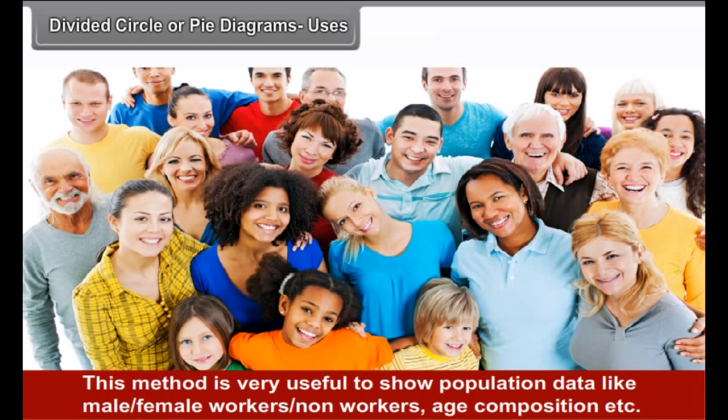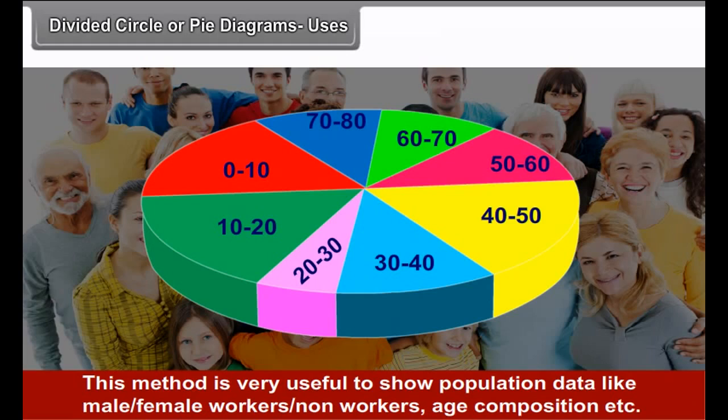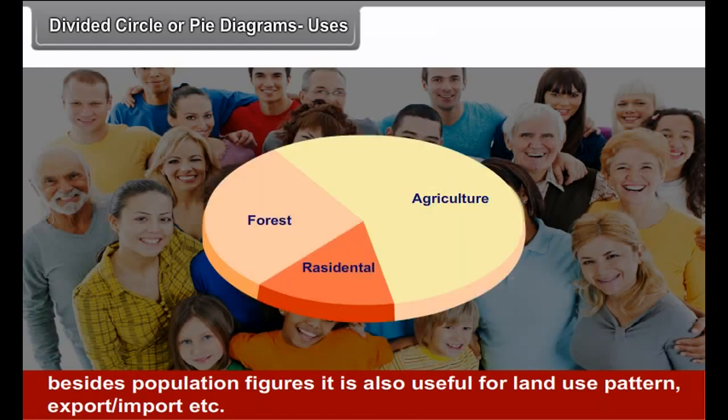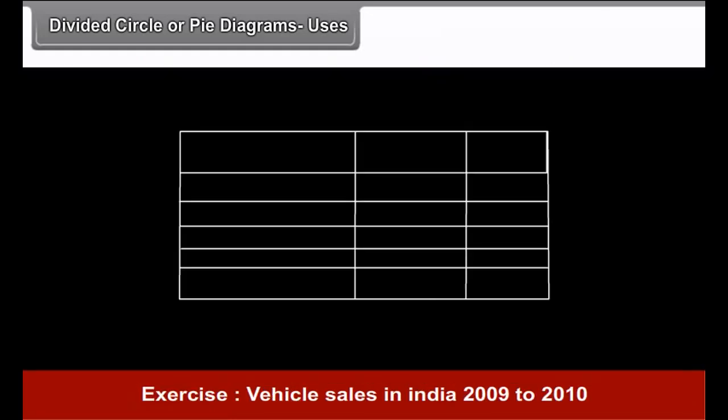Divided circle or pie diagram. Divided circle is also a two-dimensional diagram. Different sectors are shown in a circle. A circle has 360 degrees which are divided according to the sectors given that may be area or production. To calculate these divisions, the following formula is used. Angle of the sector is equal to sector data upon total data into 360 degrees.